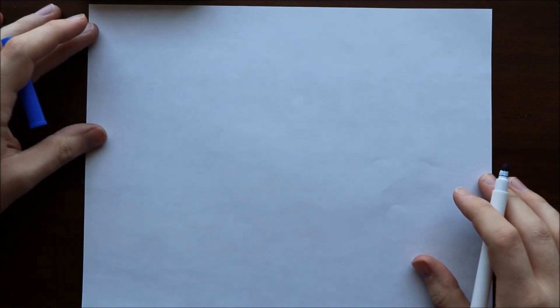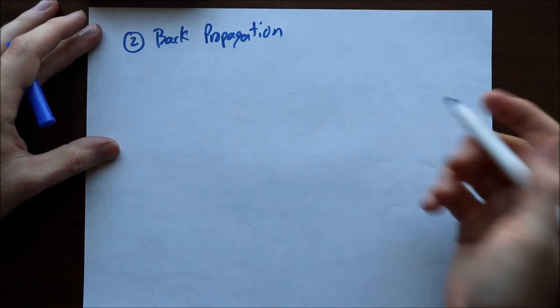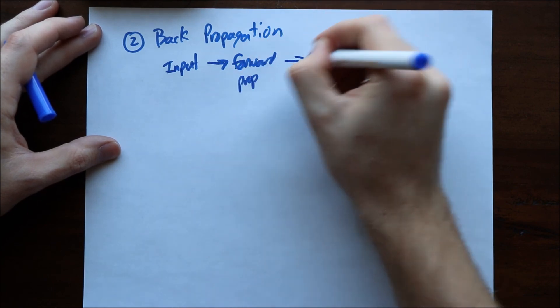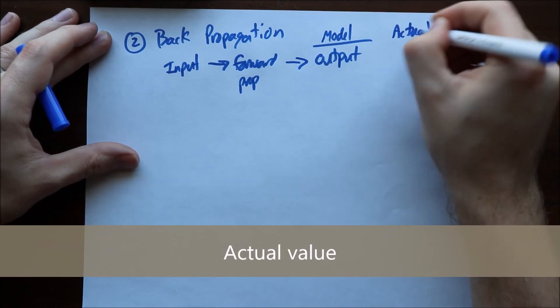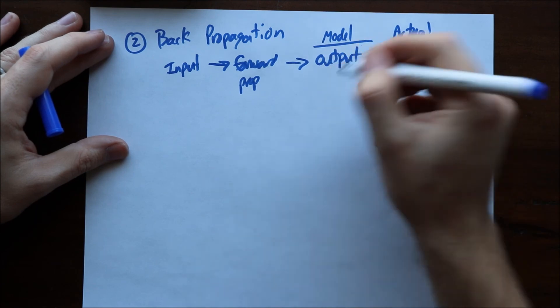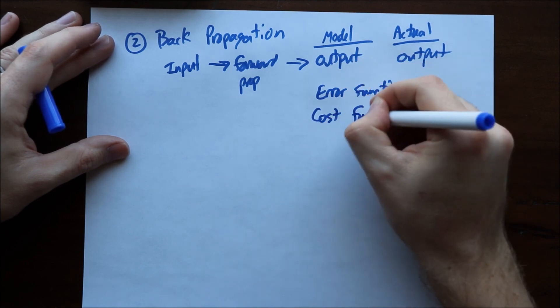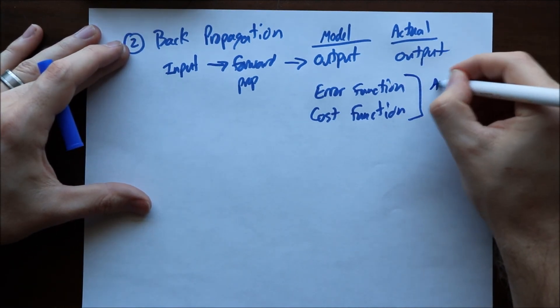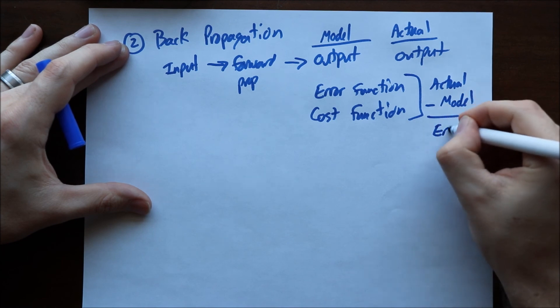With forward feed or multi-layer perceptron, the second step is the back propagation. Essentially what this is doing is you have your inputs and you do your forward propagation and what ends up happening is you get some output. We'll say this is our model output and we have an actual output as well. So you want to figure out what the error is here. There are different ways to do this but you have what they call an error function or many other people call these cost functions.